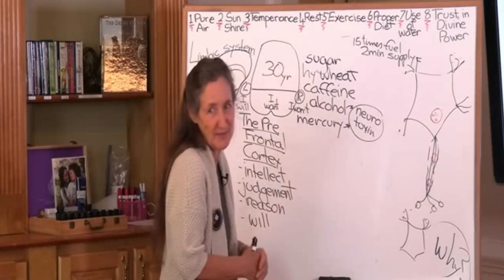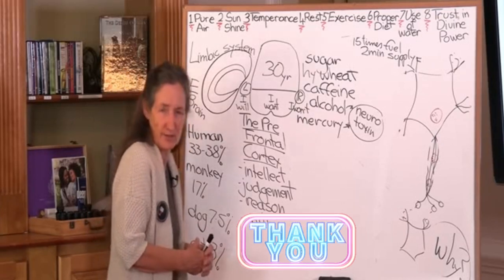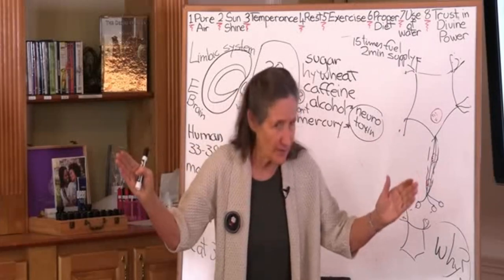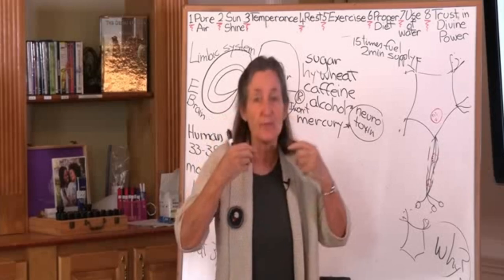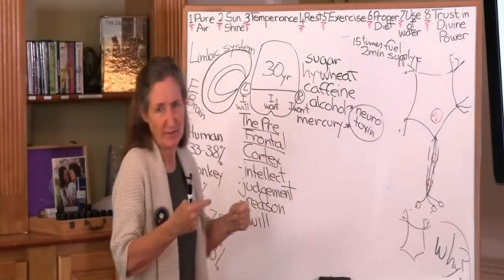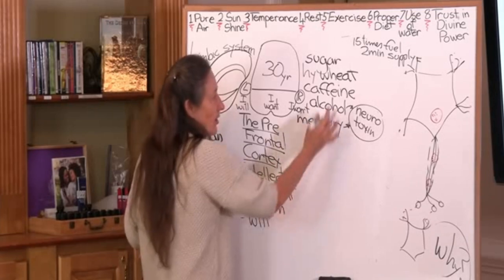Mercury is bioaccumulative. That means the bigger the fish, the more accumulation of mercury. The longer it's in your mouth, the more accumulation. The more vaccines you have, the more accumulation of mercury. No safe dose of mercury, no safe dose of alcohol. They're both neurotoxins which means they kill brain cells.